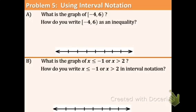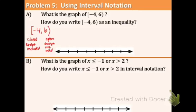Let's flip to the back and do our last example. What is the graph of [-4, 6)? A bracket means we're including, so we have a closed circle at -4. A parenthesis means open — not including — so an open circle at 6. We write in: -4, -2, 0, 2, 4, and 6. Open circle on 6, closed circle on -4, and shade in between.